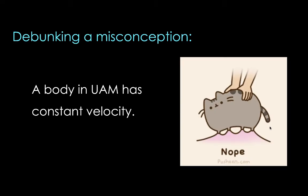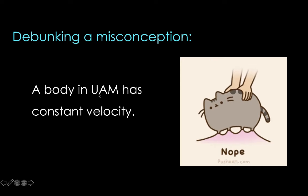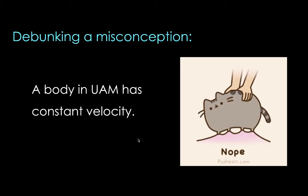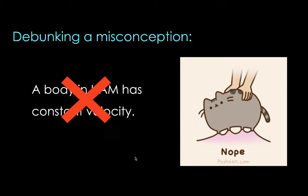I'd like to debunk some misconceptions about UAM. The first common misconception is that a body in UAM has constant velocity. This is obviously wrong. The reason behind this misconception is likely the word 'uniform' in UAM — but take note that what's uniform is the acceleration, not the velocity. In fact, the velocity is changing in UAM — it is either increasing or decreasing. So the velocity is not constant; it's the acceleration that is constant.